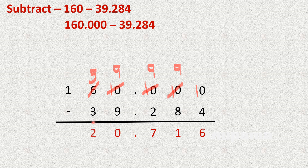5 minus 3 is 2, and 1 remains as it is. So the difference is 120.716.